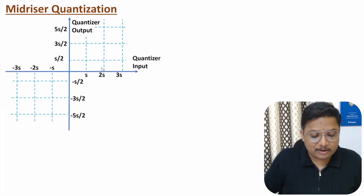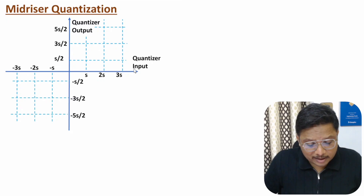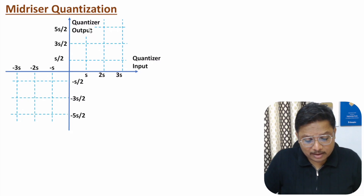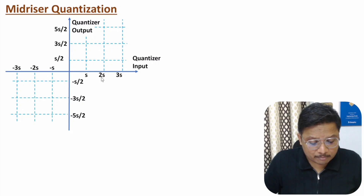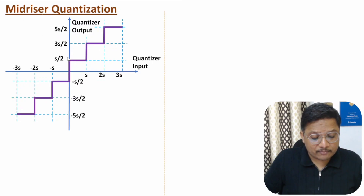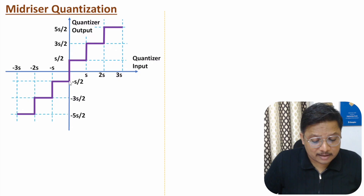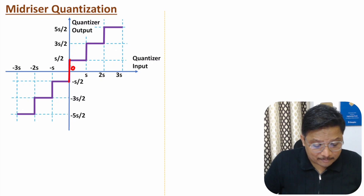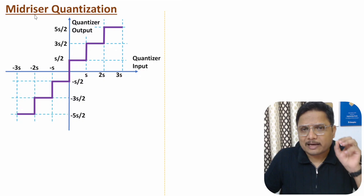Now let me explain the second category: mid-riser quantization. Here also I'll explain characteristics with input horizontally and output vertically. The decision threshold is taken at plus or minus s, plus or minus 2s, plus or minus 3s. In mid-riser, when the input is zero, the output is not zero — it is plus or minus s/2. If input is slightly greater than zero, output will be s/2; if slightly less than zero, output will be minus s/2. So at mid, the output is rising — that's why the name is mid-riser.